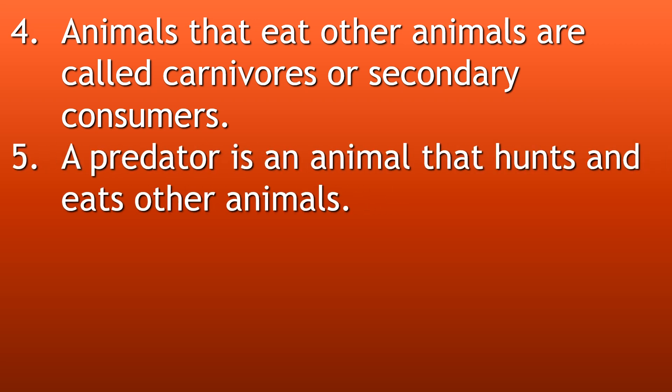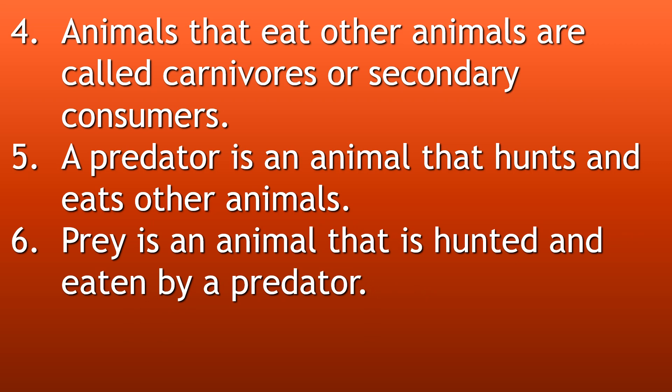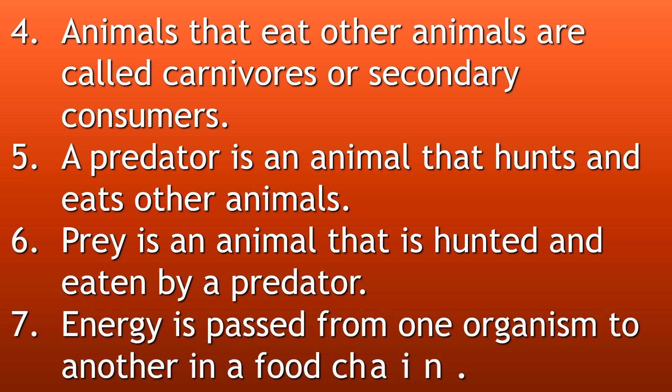A predator is an animal that hunts and eats other animals. Prey is an animal that is hunted and eaten by a predator. Energy is passed from one organism to another in a food chain.